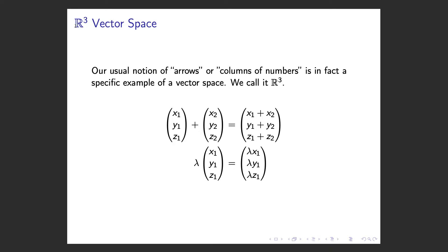One example that we are all very familiar with is the R3 vector space, where an element is a column of three numbers. We define addition of columns of three numbers as such, and scalar multiplication as such. You might be familiar with R3 because we live in Euclidean R3 space.